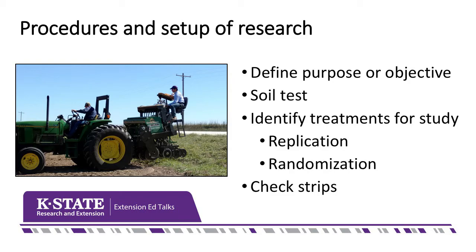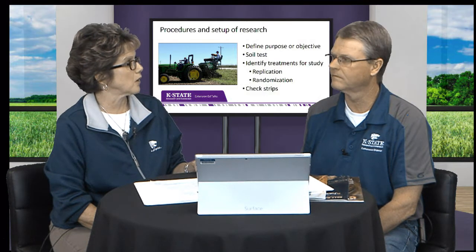The next step is to soil test. That's really critical in order to know where you're at as far as the level of nutrients, and you really need to take a very representative sample of the whole field, not just one area. The next step is to identify the different treatments in the study — whether it be a variety plot, a fertilizer source, or herbicide treatments. There are different ways to set up those tests: you can either have a replicated and randomized plot, or you can use check strips. In a randomized replicated plot, you're simply planting or doing that treatment three to four times in that one area. Using check strips is what Extension agents may more commonly do, as they may not have specialized equipment or sufficient room.